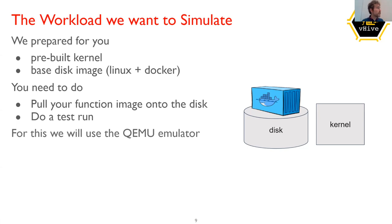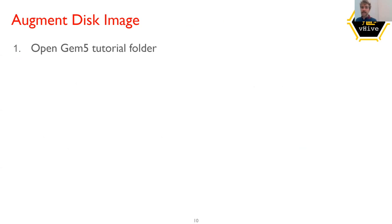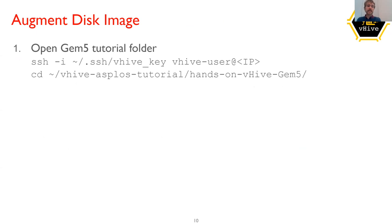To put the function onto the disk, we'll use the QEMU emulator rather than the simulator, because QEMU is much faster and only models functional behavior. Also, QEMU has internet access, which we don't have in the simulator. Now it's time for you to log into your machine — I've put the command here. Use the same IP address and cd into the hands-on material gem5 folder.